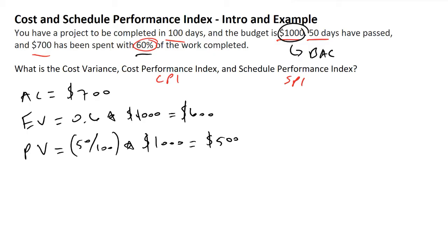Now we're going to focus on the term called cost variance. Cost variance, denoted as CV, is equal to the earned value minus the actual cost. So in our case, we've earned our company $600 in value by doing this project thus far, and we've spent $700 in their money doing that.